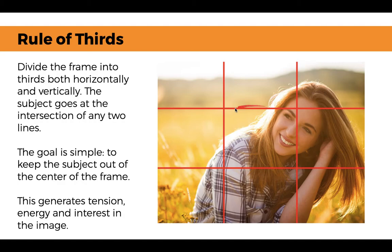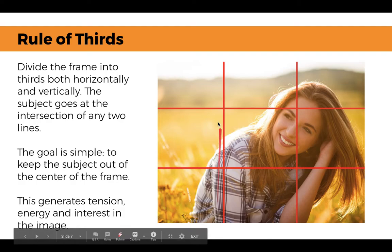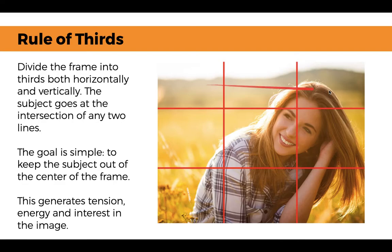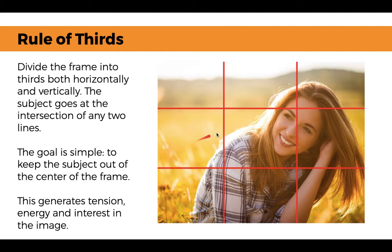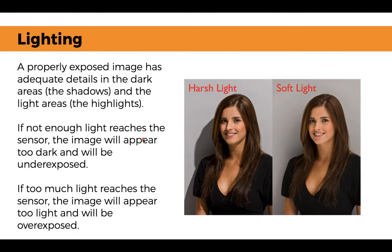Moving into the rule of thirds — when we're taking a photo, we need to keep this rule in mind. Pretend you're dividing whatever you're photographing into a grid of three columns and three rows. Whatever your subject is, you're trying to get their face, especially their eyes, not in the center of the view but on these lines. This generates tension, energy, and more interest in the photo. We want to leave space for the subject's eyes to look into — this is called eye room. If her face were on the opposite side looking outward, it would crop off the space where she needs to look.